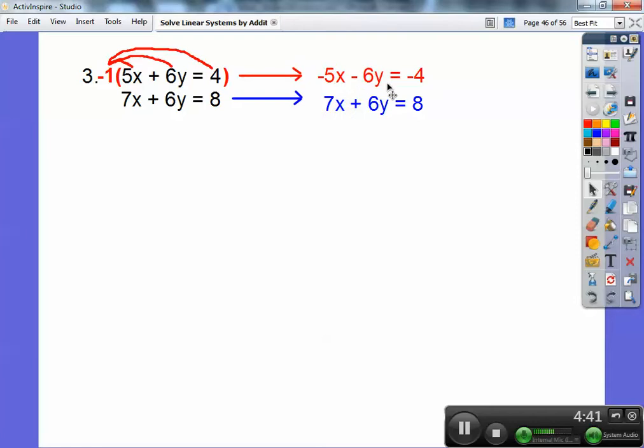Negative 6y, positive 6y. When I add them together, those cancel. Just be careful when you're adding the rest of those guys. So here we go. I'm going to go ahead and add those two equations together. So negative 5x plus 7x is positive 2x. Then negative 6y and positive 6y cancel. Negative 4 plus 8 is 4.